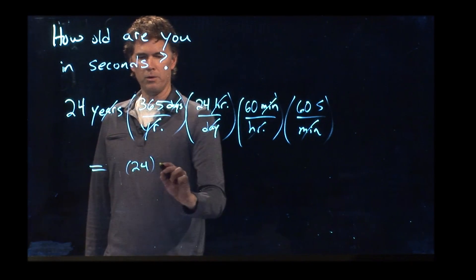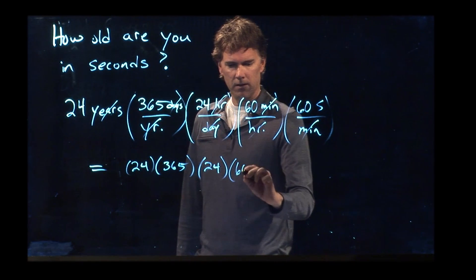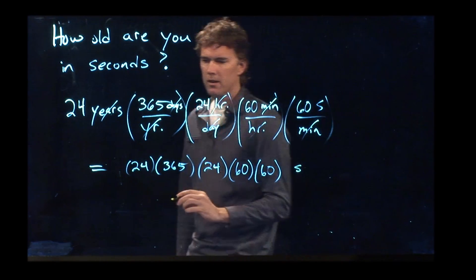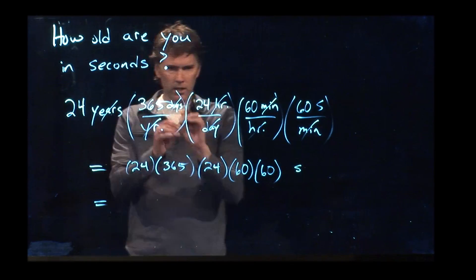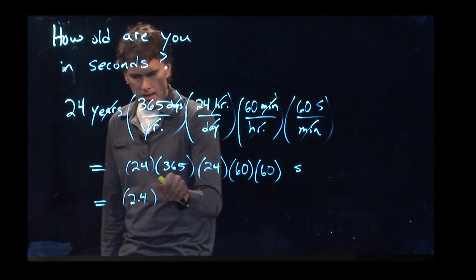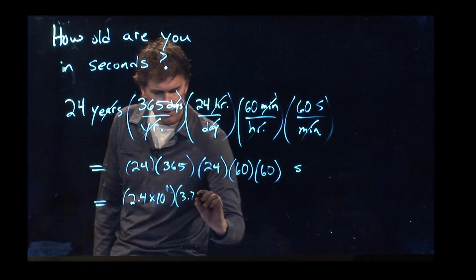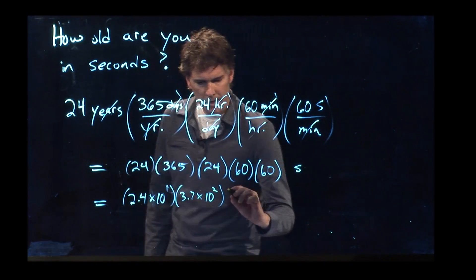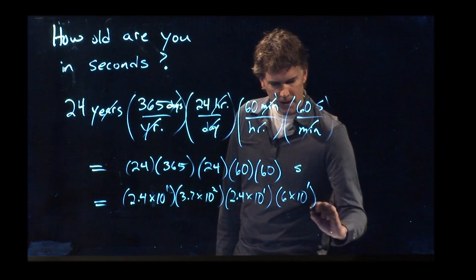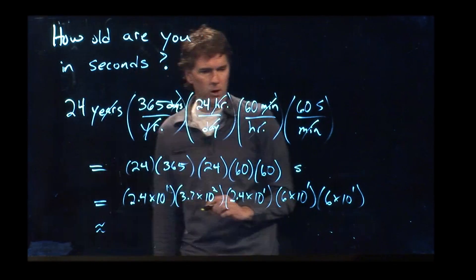Now we just have a bunch of numbers to multiply. We've got 24, 365, another 24, 60, and 60 — all ones in the bottom — and this gives us seconds. Let's approximate it: we've got 2.4 × 10¹, then 3.7 × 10², then another 2.4 × 10¹, a 6 × 10¹, and another 6 × 10¹.